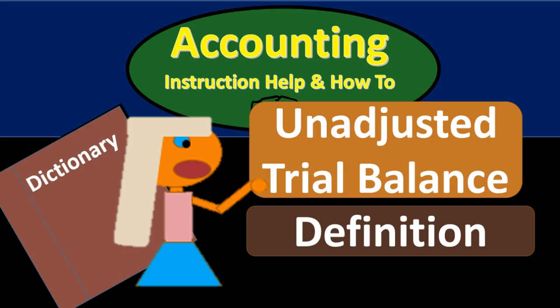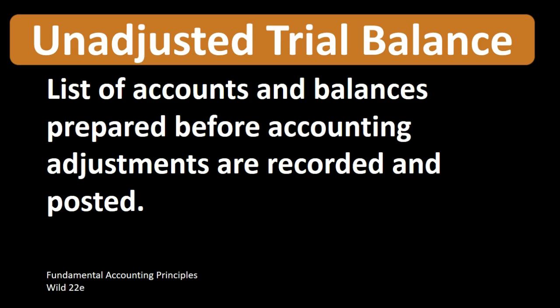Hello, in this lecture we're going to define the term unadjusted trial balance. According to Fundamental Accounting Principles Wild 22nd edition, the definition of an unadjusted trial balance is a list of accounts and balances prepared before accounting adjustments are recorded and posted. So we have a list of accounts and their balances — that's what a trial balance is. The thing that makes the unadjusted trial balance different than other types of trial balance is that this is going to be the trial balance before we have done the adjusting entry process.